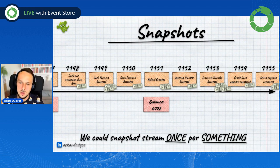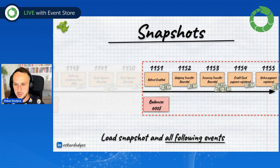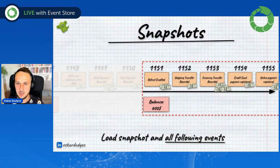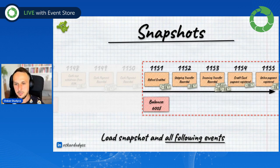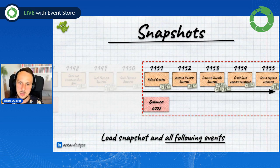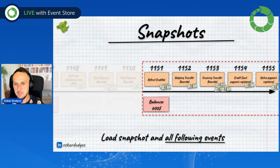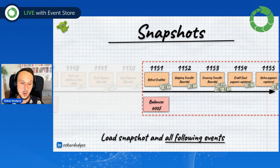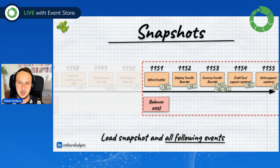How to define that interval? We will discuss that in a moment. But if we have a snapshot at some point in time, then we can load the snapshot. If the snapshot also contains information about the last position on the stream, then we can load all other events registered after we created the snapshot and build the state from there. For example, if we do a snapshot once per 20 events, then our reading would be snapshot plus 20 events.